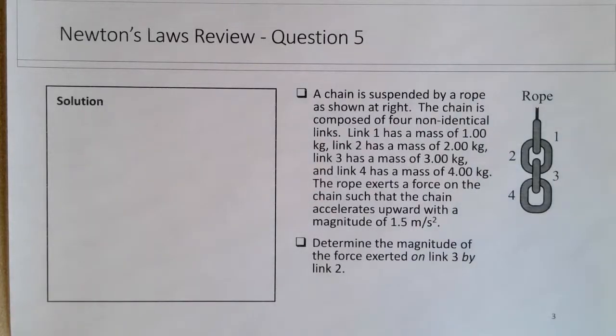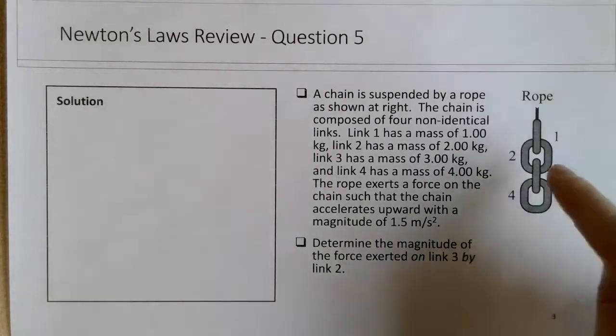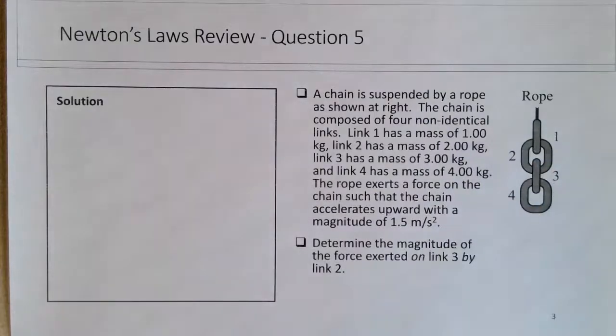And we have, yeah, it's just four different links being pulled by a rope, and so the links, we're told, are non-identical, and they have masses that correspond to their numbers: 1 kg, 2 kg, 3 kg, 4 kg. And then we're asked to determine the magnitude of the force exerted on link 3 by link 2.